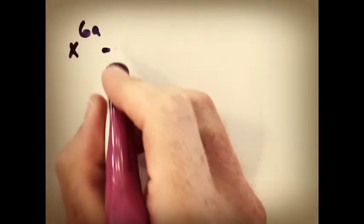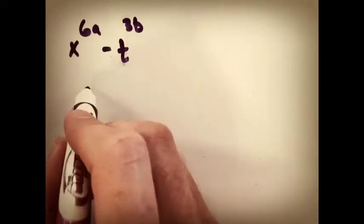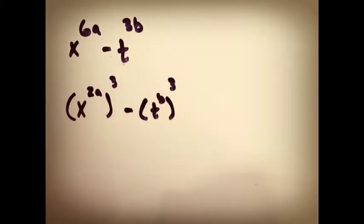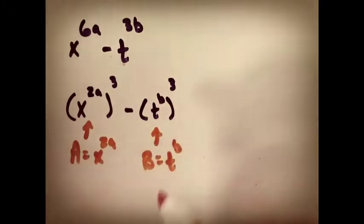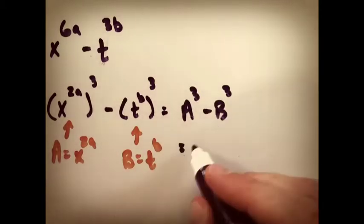Next up, you've got X to the 6A minus T to the 3B. Rewrite it as the difference of two cubes. It'd be X to the 2A cubed minus T to the B to the third power. So there's your A cubed minus your B cubed. Use the formula and go to town.